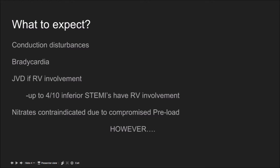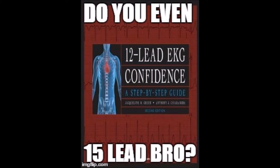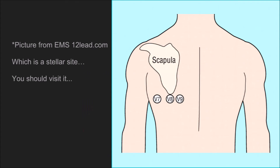When evaluating right ventricular involvement, the 15-lead ECG is the gold standard. You need to confirm right ventricular involvement because you can have an inferior wall MI without it — in which case nitrates are fine. To perform a proper 15-lead, take V4, V5, and V6 and place them as shown on screen. This picture came from ems12lead.com — a great site I recommend to everyone.